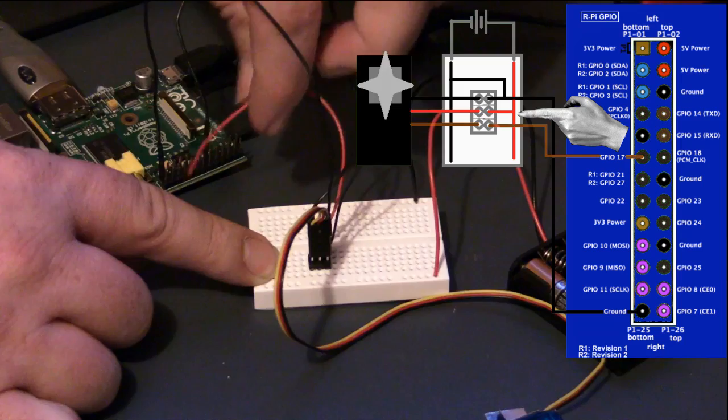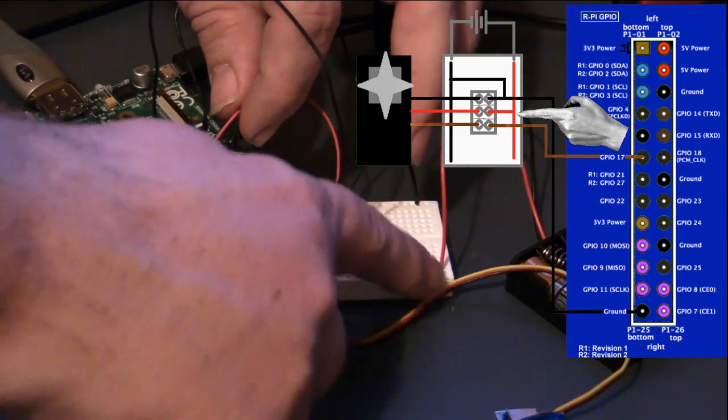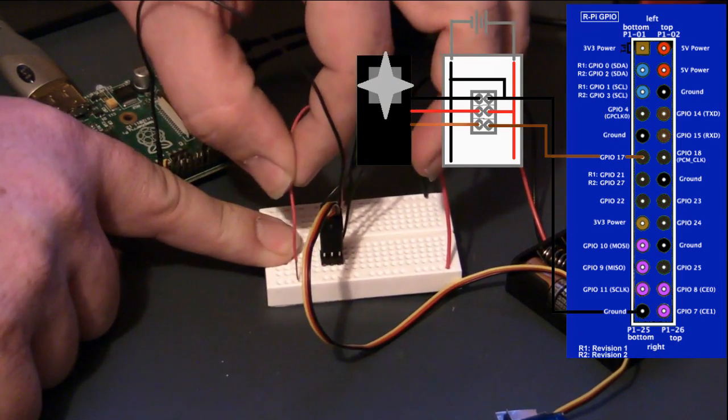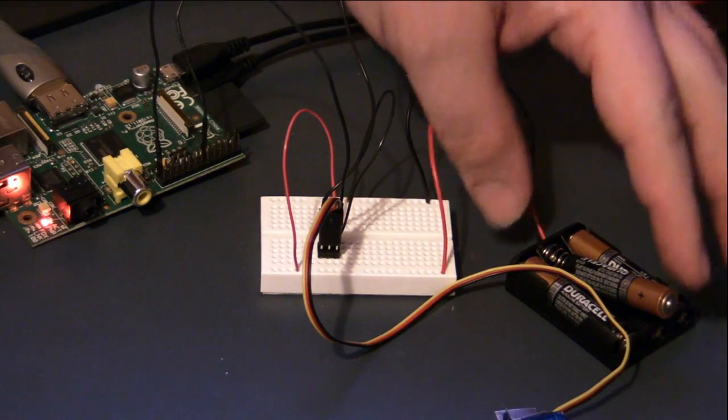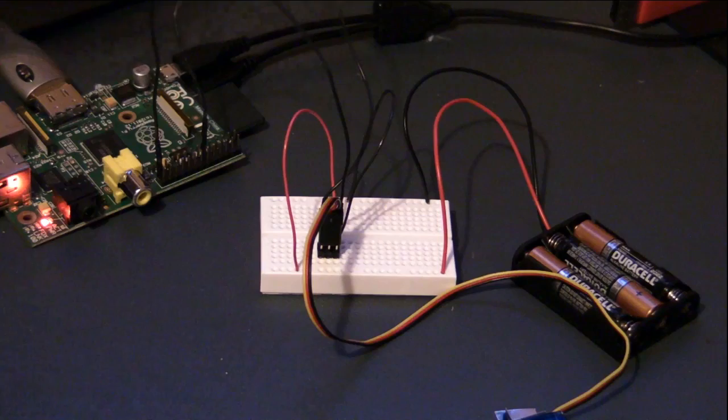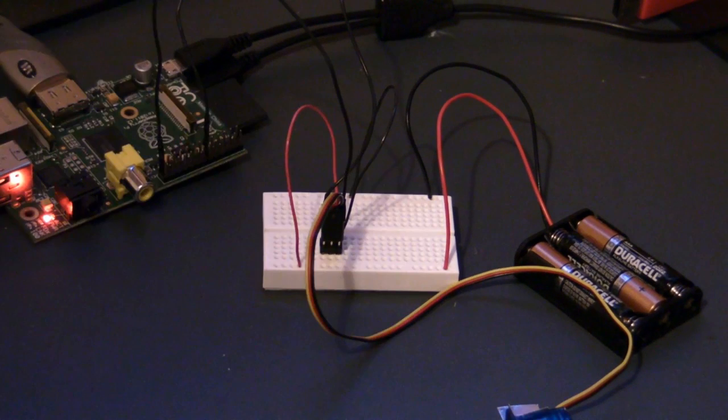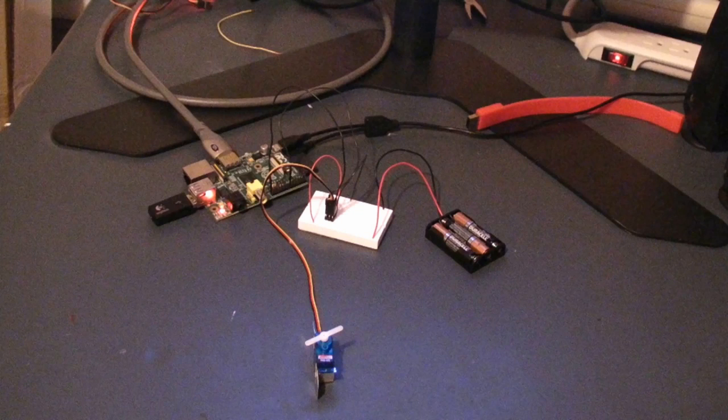This will connect the positive from the servo motor to the positive on my power supply. That's our last connection, so it's now safe to power this circuit. I'll pop my battery back in, and we're done.